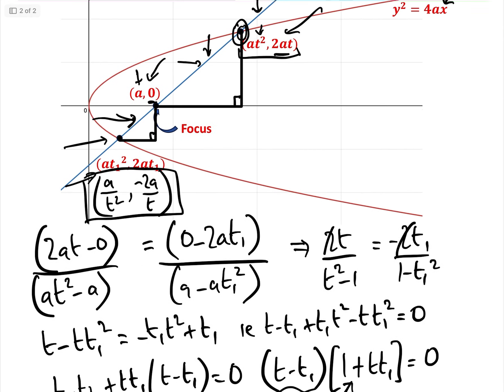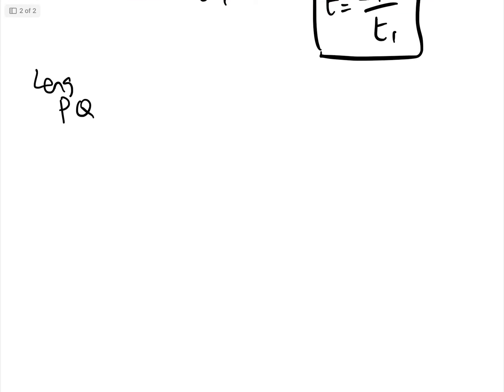So what we're going to do is the length of the focal chord pq, and let's just see pq is going to be here, p and q here, and we're going to use these coordinates here and these coordinates here, and see if we can get a nice formula for the length of pq.